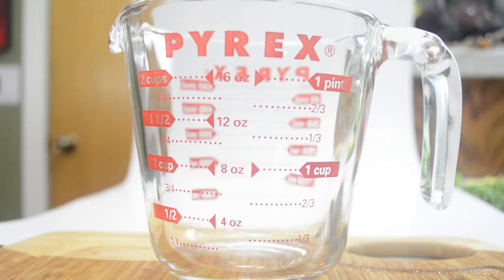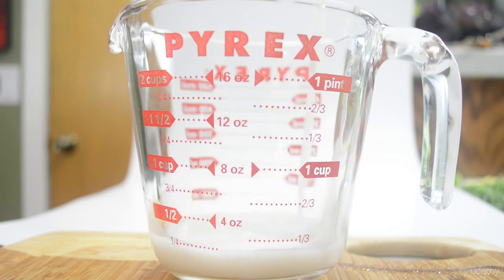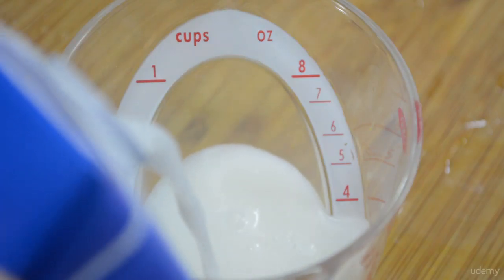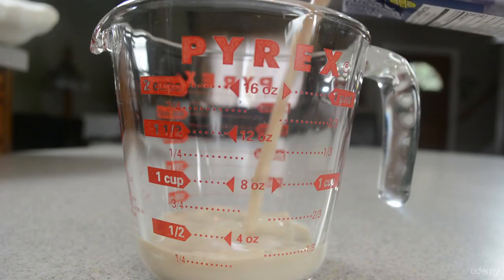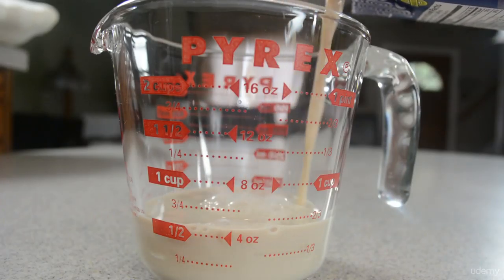A liquid measuring cup is often transparent and has a scale on the side or at an angle inside the measuring cup. When using a scale on the side, it is important to be at eye level with the scale so that an accurate measurement is achieved.